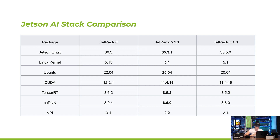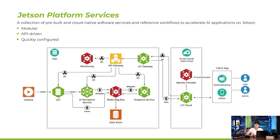This is the comparison table highlighting the component version changes between JetPack 5 and JetPack 6. When migrating from JetPack 5 to JetPack 6, you need to be aware of your software dependencies on libraries such as Ubuntu, CUDA, and TensorRT. Transitioning cannot be done via apt upgrade; instead it requires the SDK Manager or manual updating.